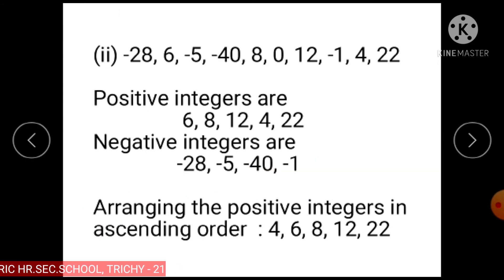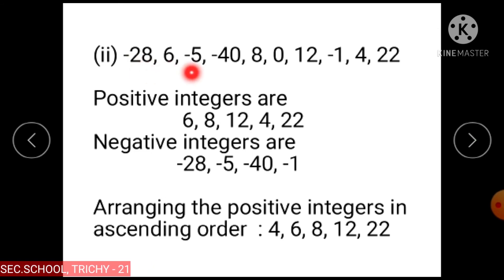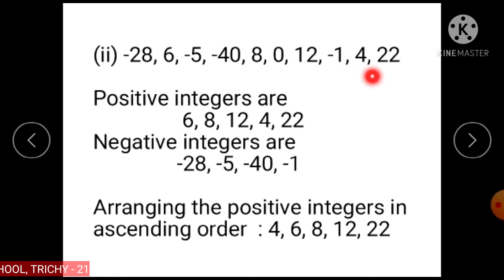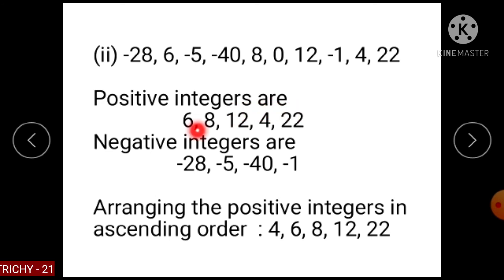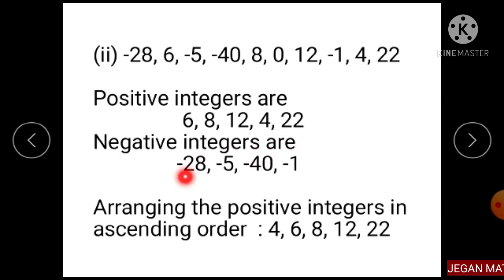Subdivision 2: The given integers are minus 28, 6, minus 5, minus 40, 8, 0, 12, minus 1, 4, and 22. Positive integers are 6, 8, 12, and 22. Negative integers are minus 28, minus 5, minus 40, and minus 1.